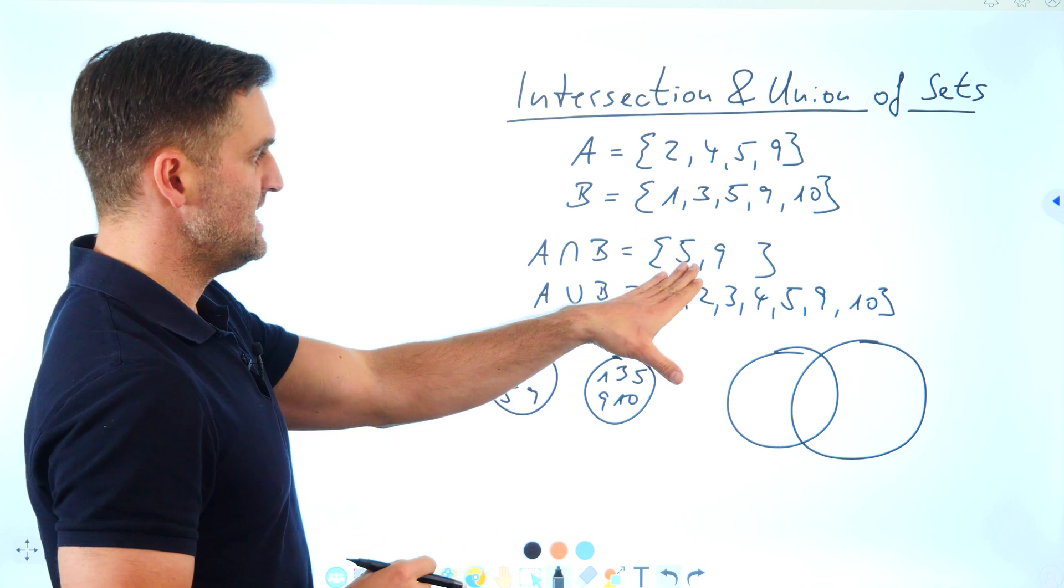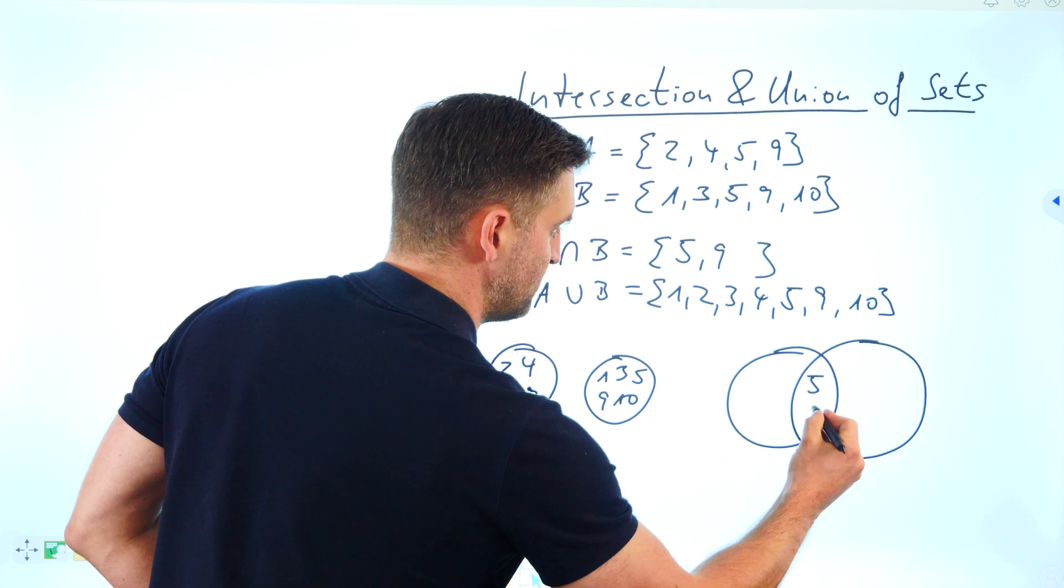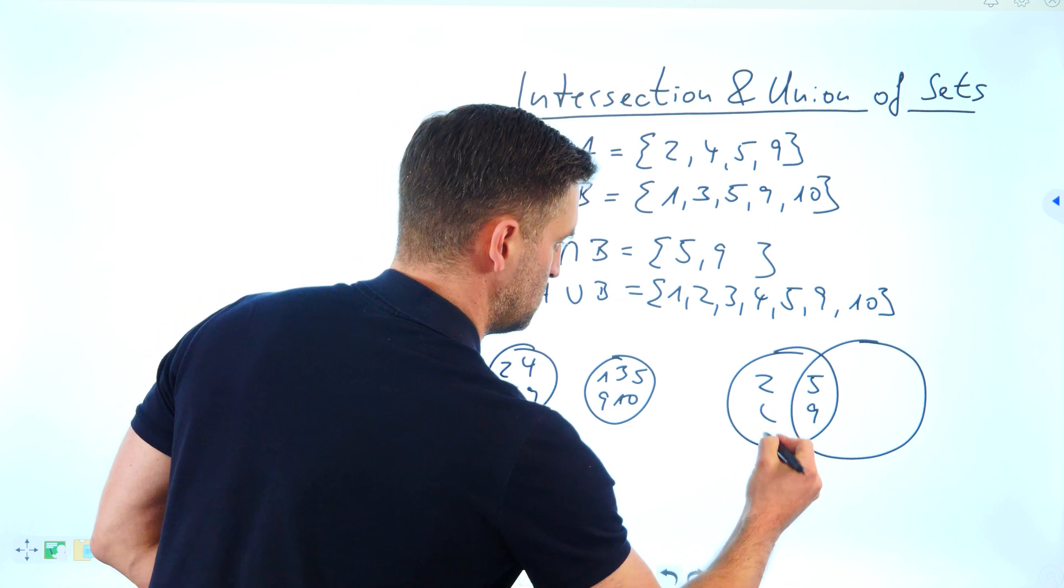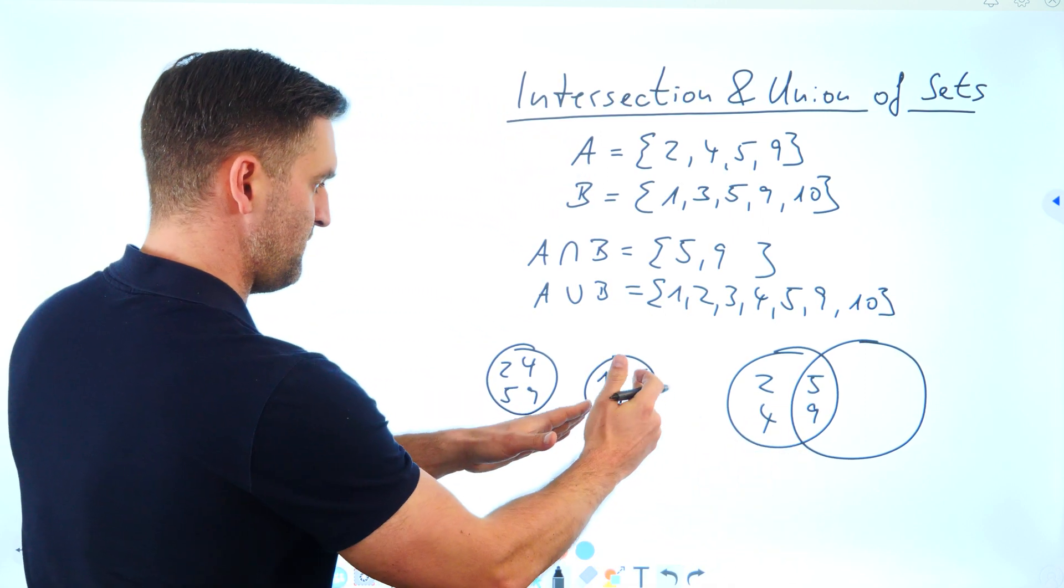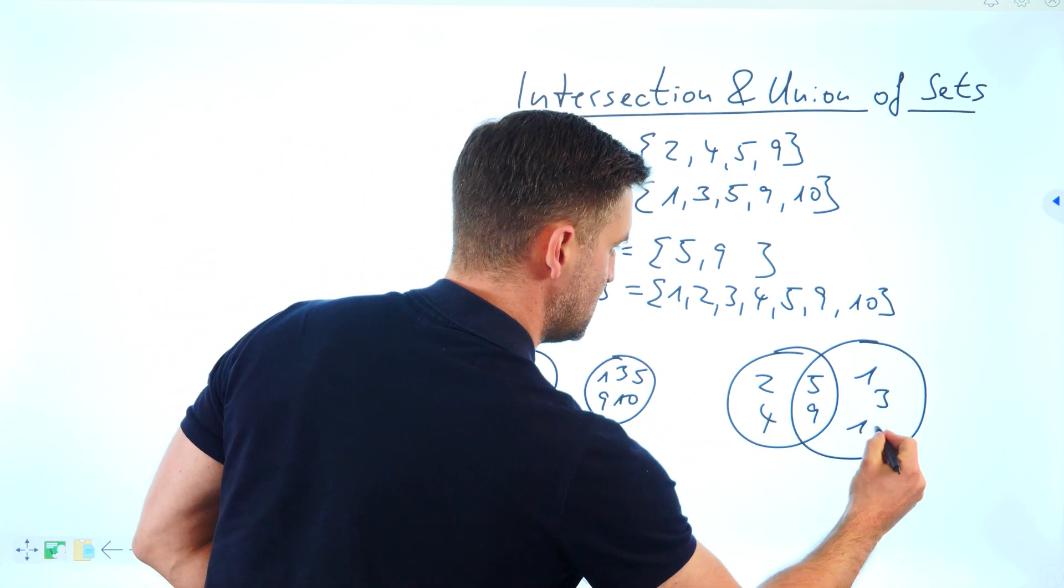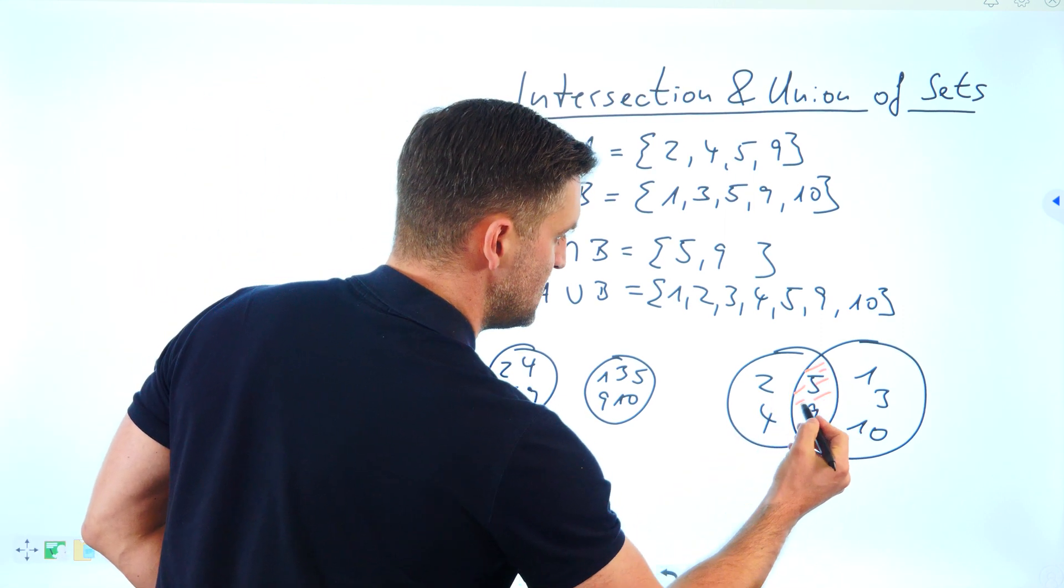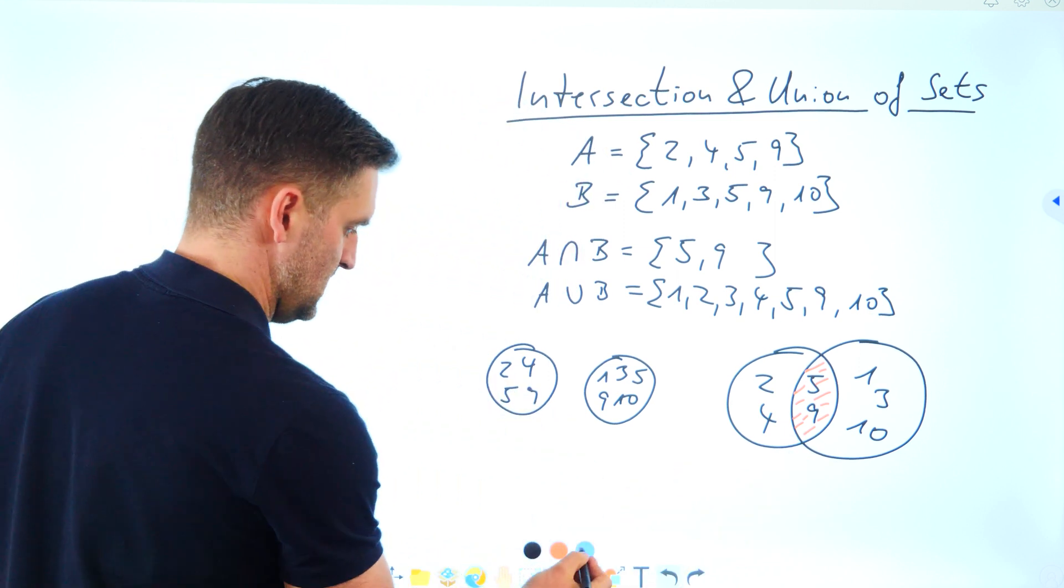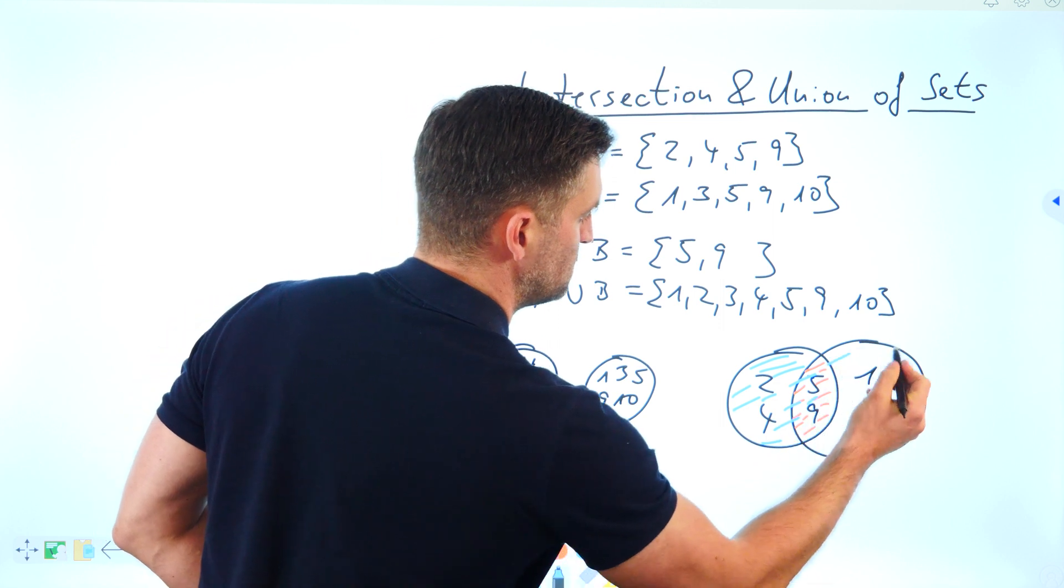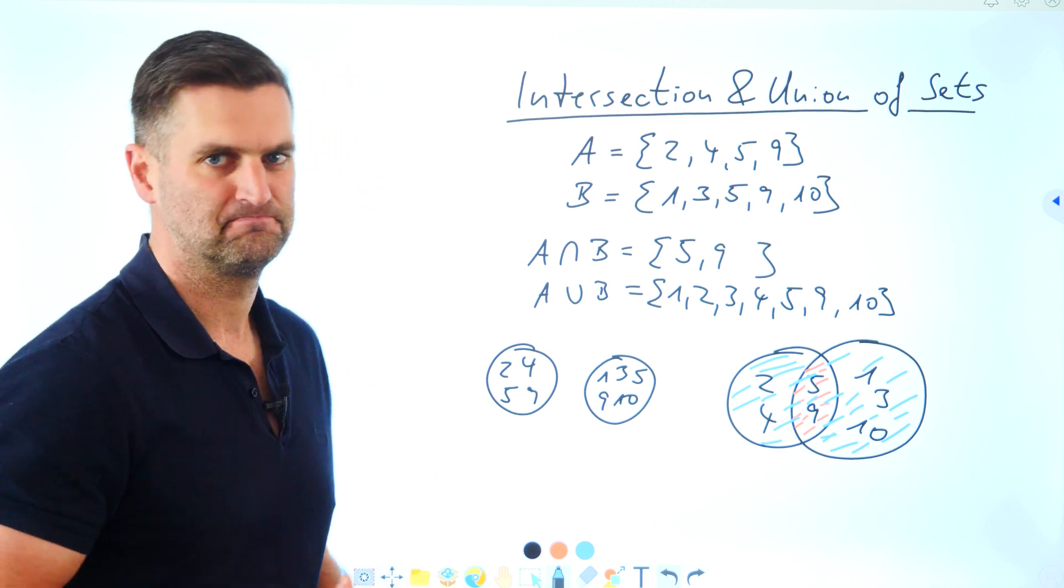You see the intersection, 5 and 9, in the visualization would be here. From set A we have 2 and 4, then 5 and 9 shared, and from B we have 1, 3, and 10. Let's do it in red - here we have the intersection. And let's do it in blue - here we have the union, which would be every element. Easy.